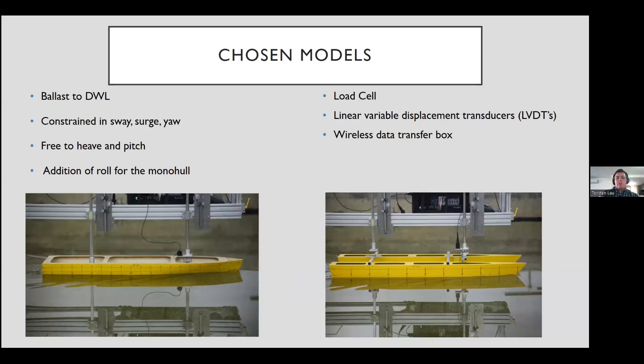For the testing, we chose to use two quite different hull types: one being monohull, second being catamaran, which you can see on the bottom there. Both of these have a similar waterline length of 1600 and 1685 respectively. They were both ballasted down to design waterline and displacement so that we had similar hull types to compare to each other. In the testing, we chose to constrain the values that we weren't interested in. In this case, that was the sway, surge and yaw, which then just left us free to heave and pitch. There is also the addition of roll for the monohull as well.